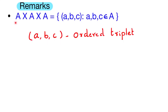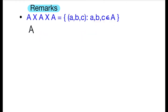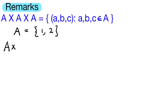A cross A cross A is equal to the set of all ordered triplets (a, b, c) such that a, b, c all belong to A. For example, if the elements of set A are 1 and 2, we first find A cross A.